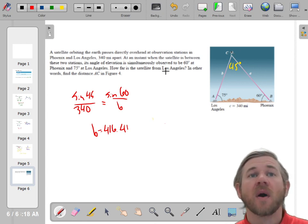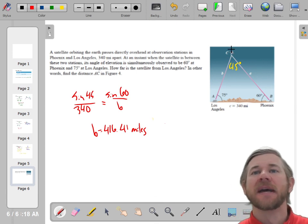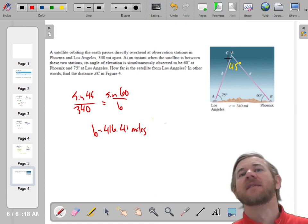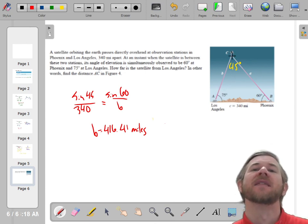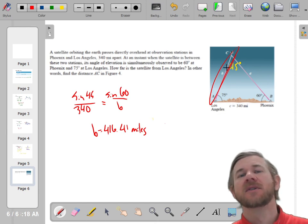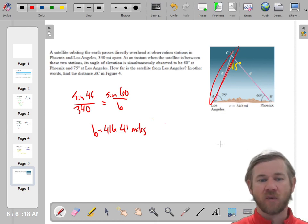416.41 what? We're talking about miles. Miles. So what's that mean? You have a satellite up in space. You know the angle of elevation from Phoenix. You know the angle of elevation from LA. And that means that you can find the distance of the satellite from LA, which is 416.41 miles.